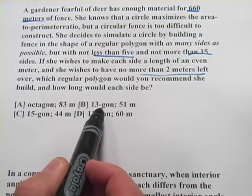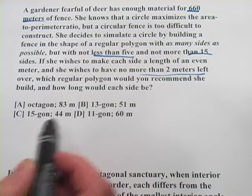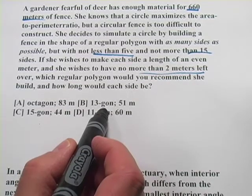Let's say we've got an octagon, that's 8, a 13-gon, a 15-gon, an 11-gon. So if the 15-gon works, satisfies all these other criteria, perfect. If it doesn't, we'll go to the 13-gon.